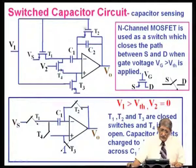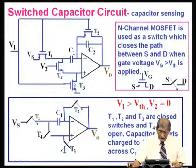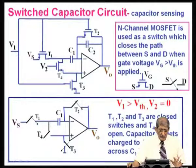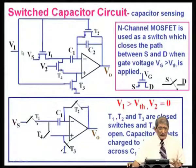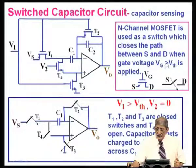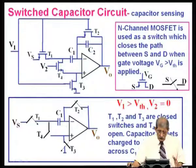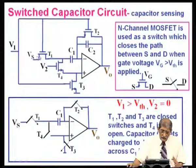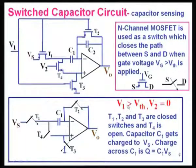This is done by means of the switched capacitor circuit. Transistors T1, T2, T3 all have their gates connected together to voltage V1. Whenever V1 is greater than threshold voltage V_TH, T1, T2, T3 act as closed switches — there is a path between source and drain. When V1 > V_TH, T1, T2, T3 are shown as closed switches, but V2 = 0, so T4 is open.